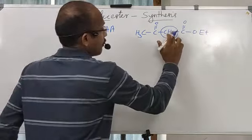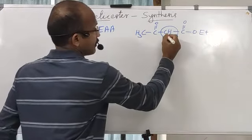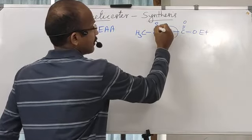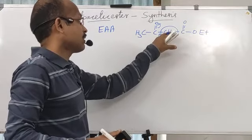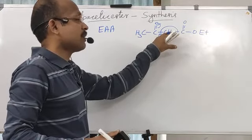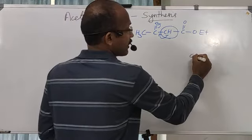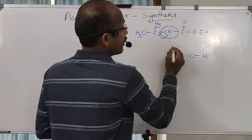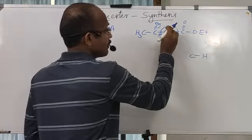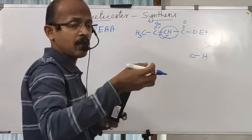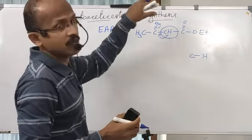If a proton is abstracted from this active position, the negative charge generated will be stabilized by these electron-withdrawing groups. Compared to other C–H positions, hydrogen can be abstracted from this active carbon by a very strong base, thereby generating a negative charge that will be stabilized.